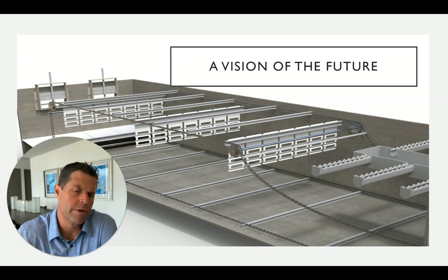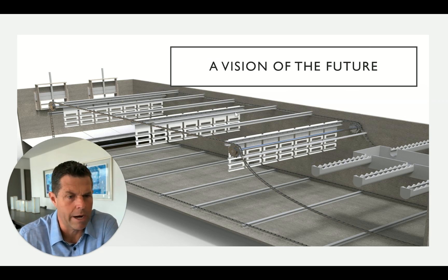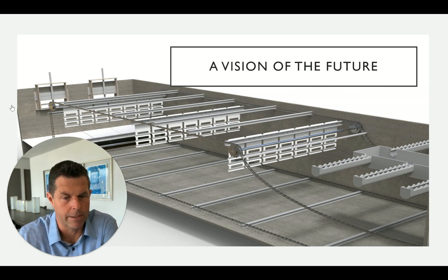This is the other reason that rectangular basins make great candidates for optimization. Because we're able to correct flows at multiple locations across the axis of the tank, we can introduce a secondary set of baffling and a third set of baffling to really make the most out of the existing concrete that's available to us in a rectangular basin.